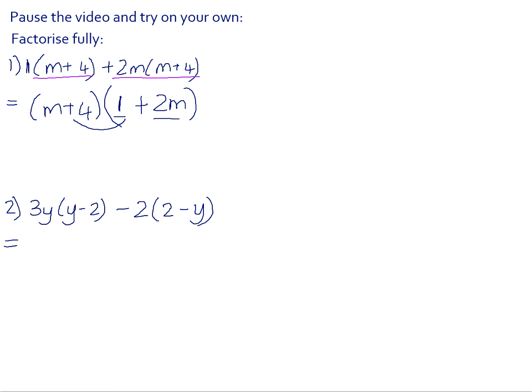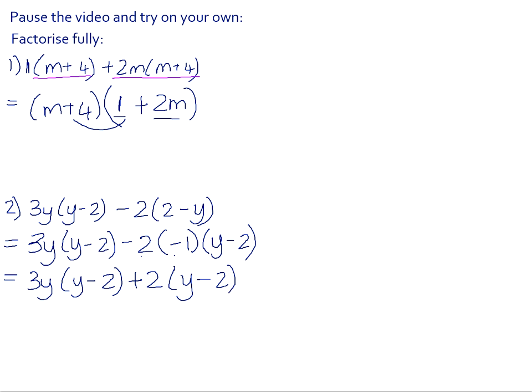In number two, we can see that y minus 2 could potentially be a common bracket. But in order to make that work, we first need to take out a common factor of minus 1 so that we can switch the 2 and the y around. So that gives us 3y times y minus 2. Negative 2 times negative 1 is positive 2. Now that our brackets are the same, we can take out y minus 2 as a common factor. We would have to times y minus 2 by 3y to get that first term, and we would have to times it by positive 2 to get the second term.